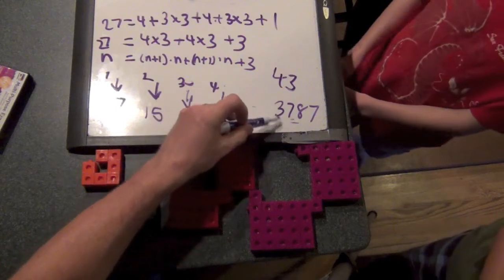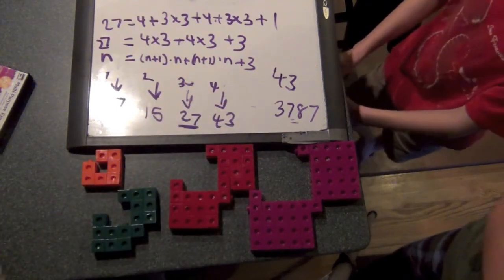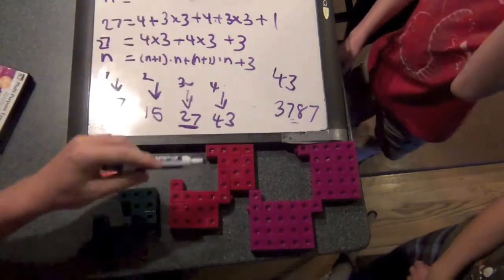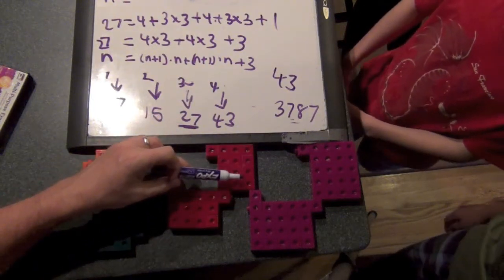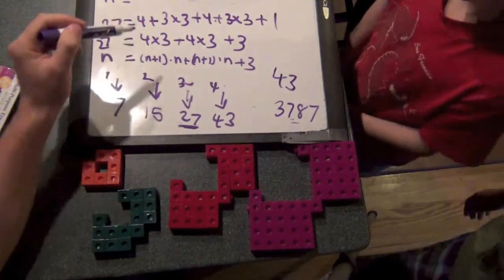That's awesome. Now we'll check in a second if 43 gets to 3787. That'll help us get a hint if the pattern's right. Now, your pattern for N. When N was three, we did four plus three times three, four plus three times three plus one. So for N, when N was three, we had four in the beginning. When N was two, how many did we have in the beginning? We had three.